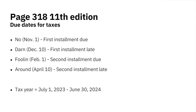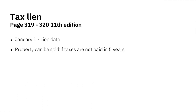Quick exam questions: the first installment of property taxes is due November 1st, delinquent after December 10th. The second installment is due February 1st, delinquent after April 10th. What happens if you don't pay your property taxes? On January 1st, the state's computers put liens on everybody's houses. So January 1st is the lien date for non-payment of taxes.